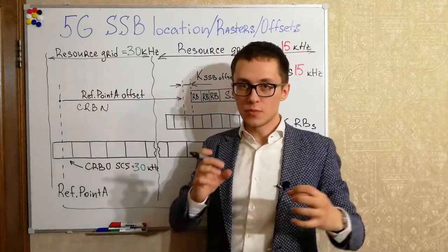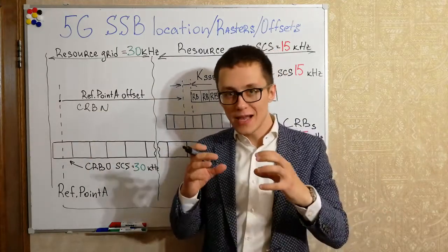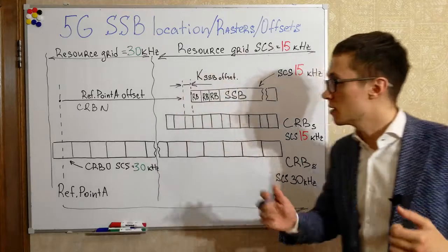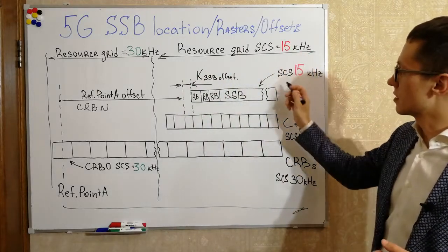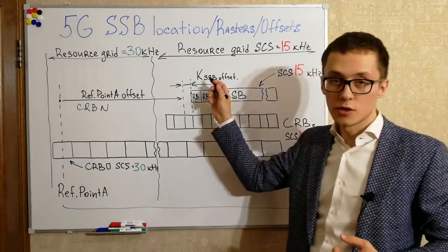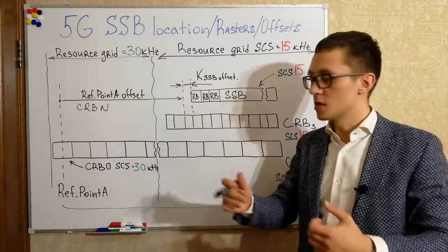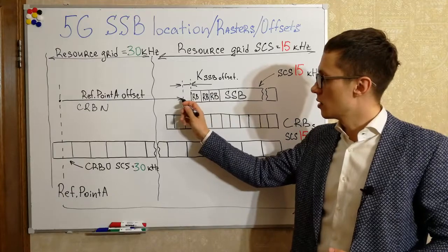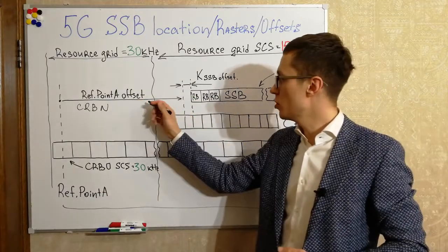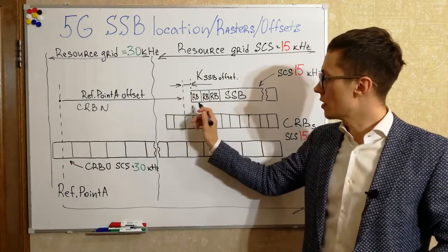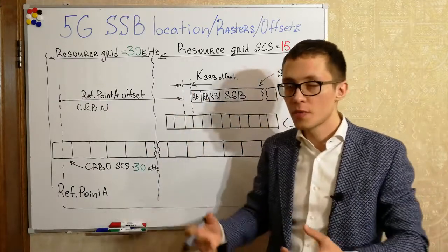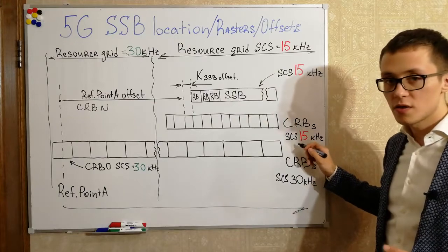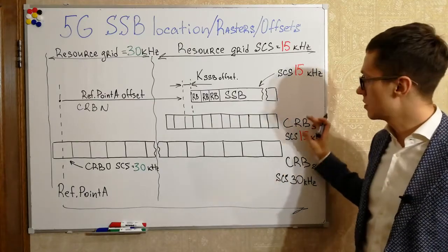In the case of a different subcarrier spacing — where the SSB has another granularity and another resource grid, like 15 kHz in my example — we should use an additional offset. This is the KSSB offset, used to adjust our reference point offset to the other subcarrier spacing. As you can see, even common resource blocks can be calculated with another subcarrier spacing, like 15 kHz in my example.